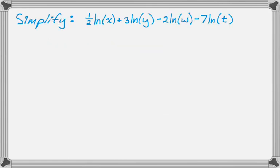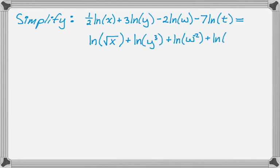Let's take a look at another example going in the opposite direction — simplifying. First, I'll use coefficients become exponents: one-half natural log of x becomes the natural log of radical x, and 3 natural log of y becomes the natural log of y cubed. I treat negative 2 as a coefficient — so plus negative 2 natural log of w — which becomes plus the natural log of w to the negative 2. Similarly, minus 7 natural log of t becomes plus the natural log of t to the negative 7.